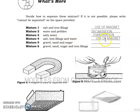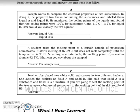After using the magnet to separate salt and water, you use evaporation. For gravel, sand, and sugar you can use decantation first, then filtration. For gravel, sand, sugar, and iron filings, you use a magnet first, then physical manipulation. By looking at it, liquid A is a substance and liquid B is a mixture.